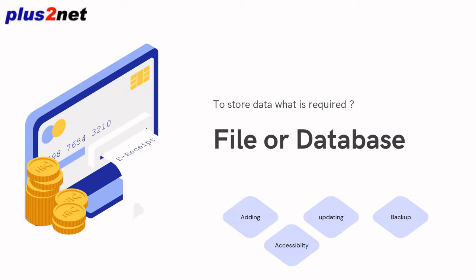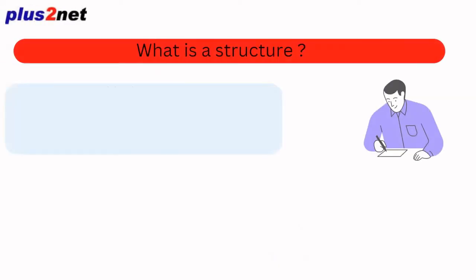But when I have a lot of data and need to frequently access it, update it, and also maintain a level of security — meaning who can update it, who can delete records, who can add new records, or who can only view records — these permission levels are also required. If it is just 5 or 10 records, a simple flat file or text file can also be used.